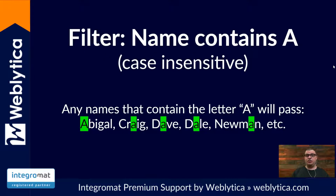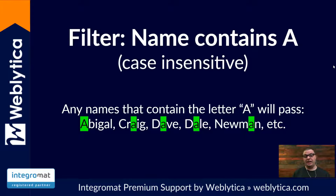In text filtering you can do case sensitive or case insensitive. Case insensitive means you don't care whether it's uppercase or lowercase — you want to match any letters that match. So if we're looking for name contains A and we have case insensitive selected, names like Abigail, Craig, Dave, Dale, and Newman — which all have lowercase A's in the middle — would also go through your filter. Anything that is true for your filter condition will pass through.